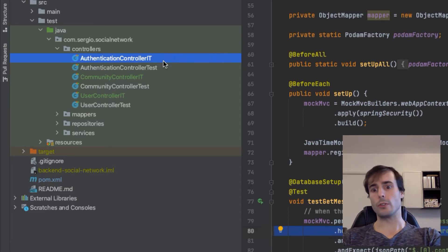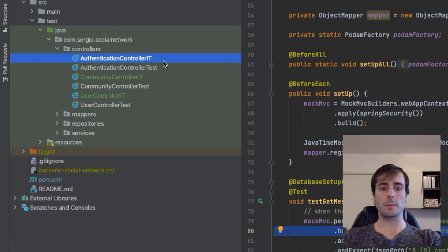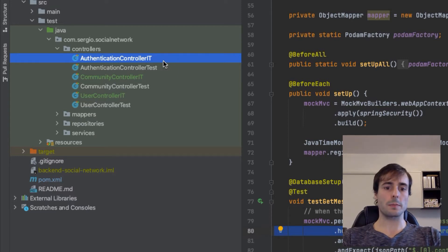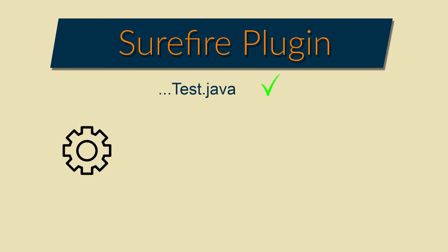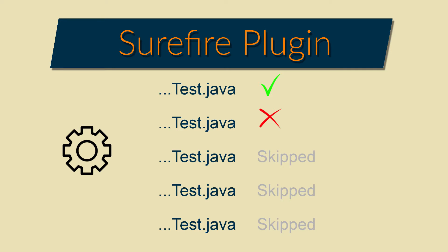Now let's configure the Surefire and Failsafe Maven plugins. Why do I need those plugins? The Surefire plugin is the one dedicated to running the unit tests. If a single test fails, it will stop the complete Maven build, because the unit tests are mandatory for the correct behavior of the application. If a single unit test fails, it means that the application isn't stable.